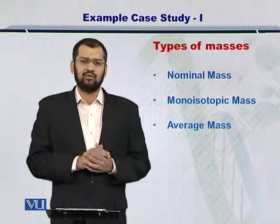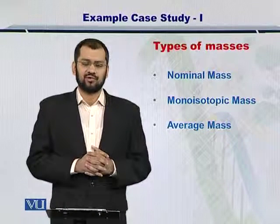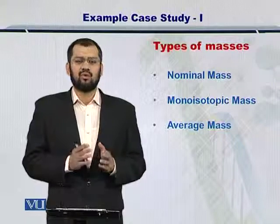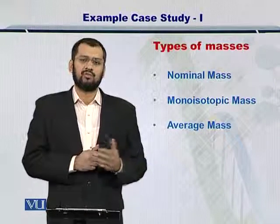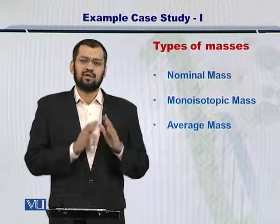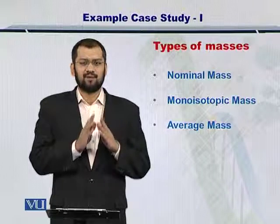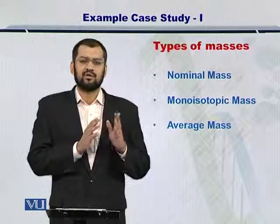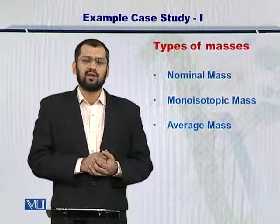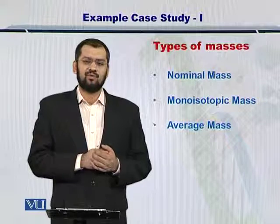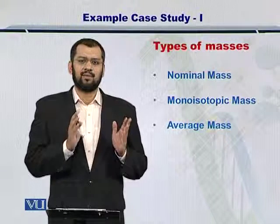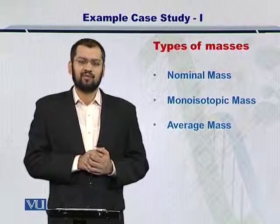Before I move on, I would like to introduce you to the other types of mass definitions. The nominal mass is simply the integer value of the monoisotopic mass — for carbon it is 12, for hydrogen it is 1, and so on. The average mass is the molecular weight of each isotope multiplied by its abundance, summed across all isotopes and divided by the number of isotopes. So if there are three isotopes, you multiply each molecular weight by its abundance, sum them all up, and divide by 3.